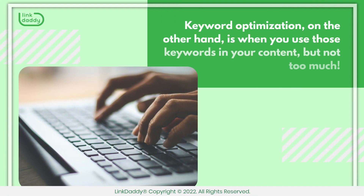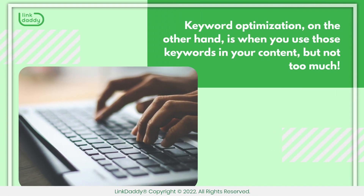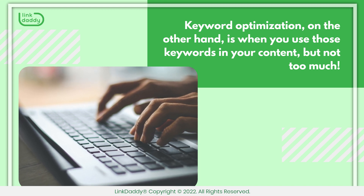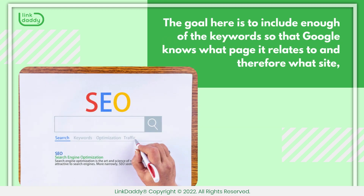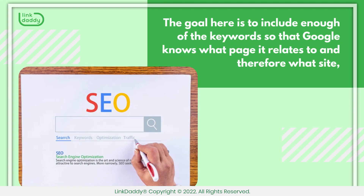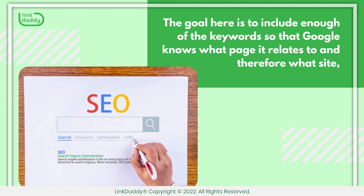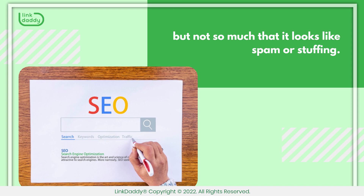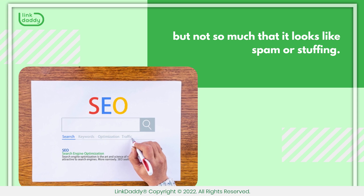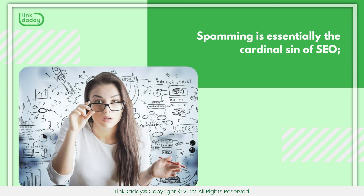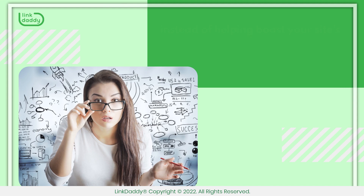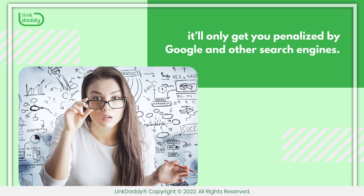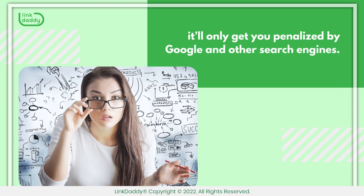Keyword optimization, on the other hand, is when you use those keywords in your content, but not too much. The goal is to include enough keywords so that Google knows what page it relates to, but not so much that it looks like spam or stuffing. Spamming is essentially the cardinal sin of SEO — instead of helping boost your site's ranking, it'll only get you penalized by Google and other search engines.